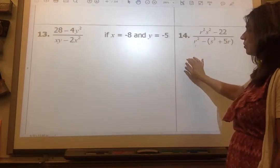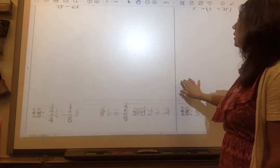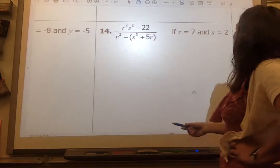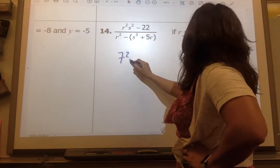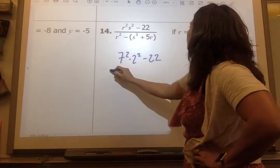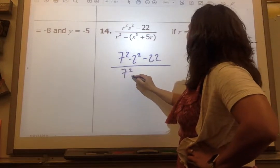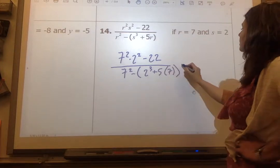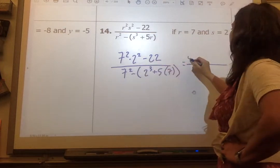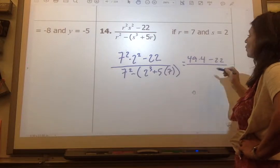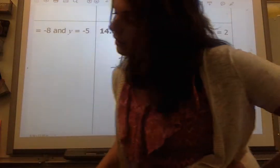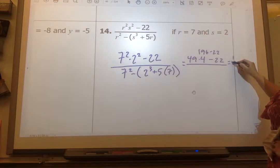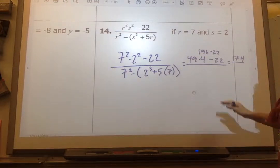Let's do number 14. I have 7 squared times 2 squared minus 22 over 7 squared minus 2 cubed plus 5 times 7. So 7 squared is 49. 49 times 4 minus 22. So 49 times 4 is 196. 196 minus 22 is going to be 174. That's my numerator.